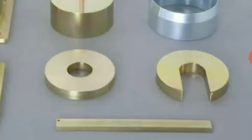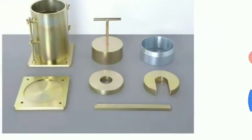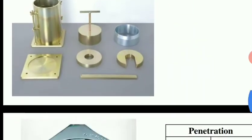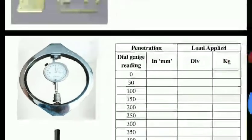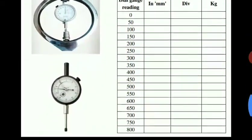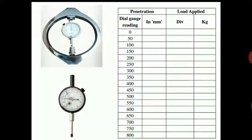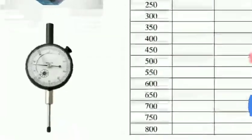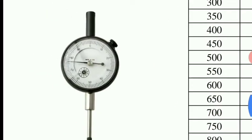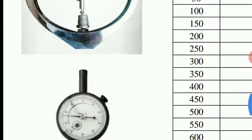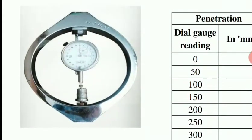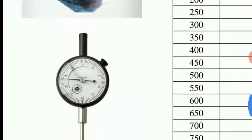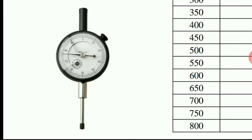Now that we have finished preparing the mold, we need to take the readings. In this test we will take two different readings from the apparatus. The first one is the dial gauge reading, from which we take the penetration value, and the next is the proving ring reading, from which we take the load values.